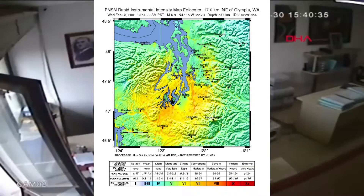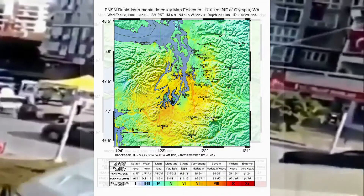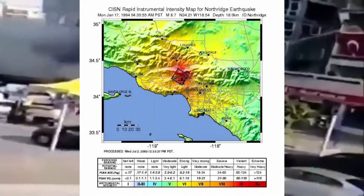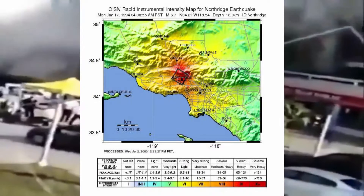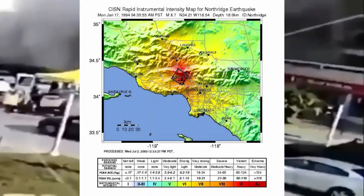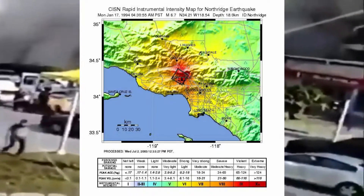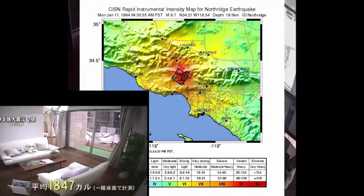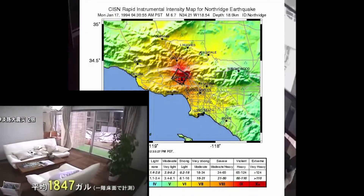Let's bring up this earthquake's hypocenter from 57 kilometers up to 18 kilometers. That would be the 1994 Los Angeles earthquake. It was a magnitude 6.7, and it had a maximum intensity of 9, or violent, and a maximum acceleration of 1.8 g.